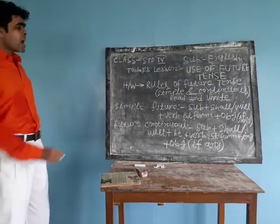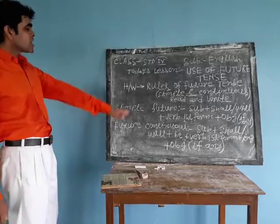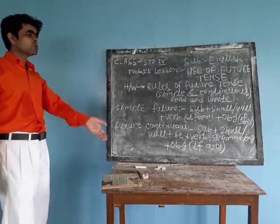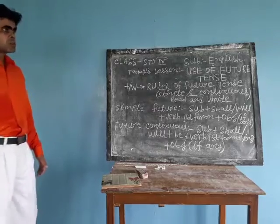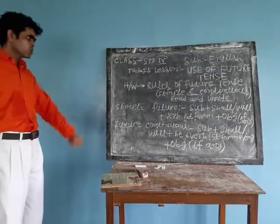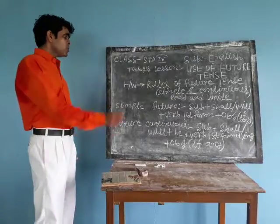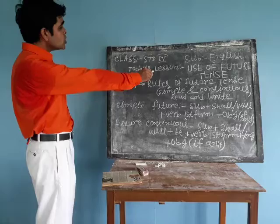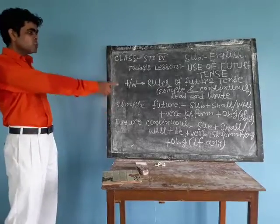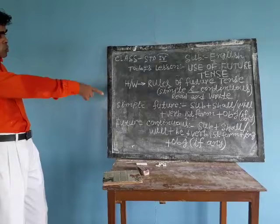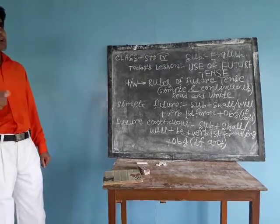You have to know the rules and write these rules with examples for both future continuous and simple future. For example: I will go to school. Read and write these rules in your copy with proper examples.